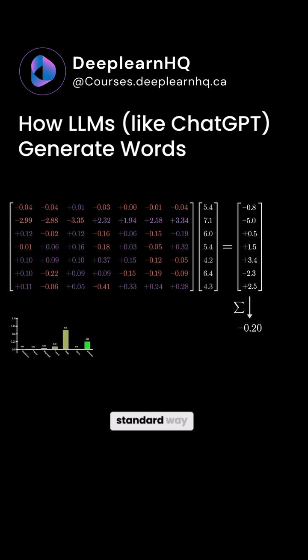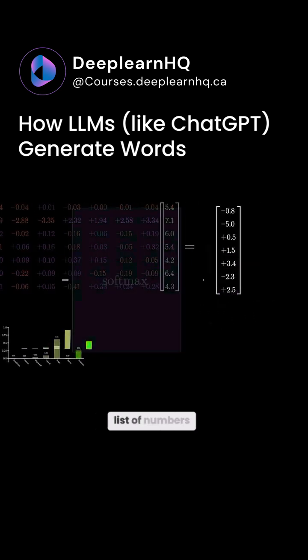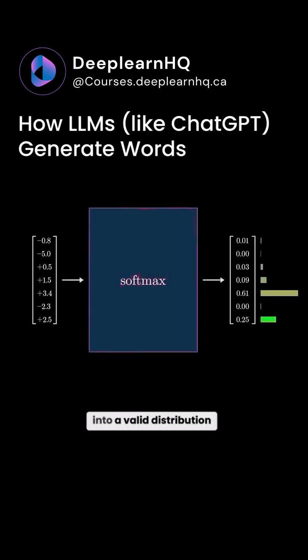Softmax is the standard way to turn an arbitrary list of numbers into a valid distribution in such a way that the largest values end up closest to 1 and the smaller values end up very close to 0.